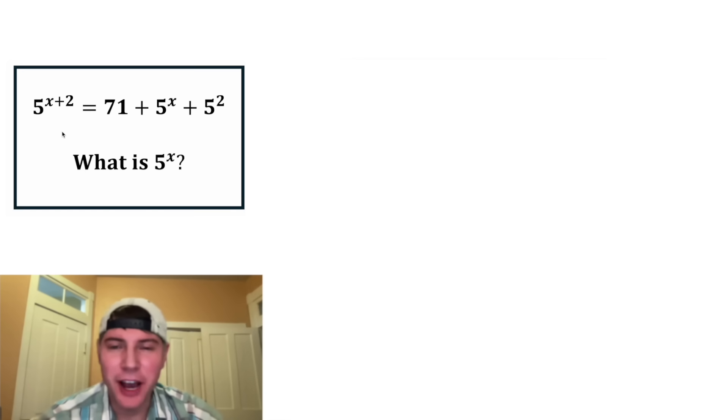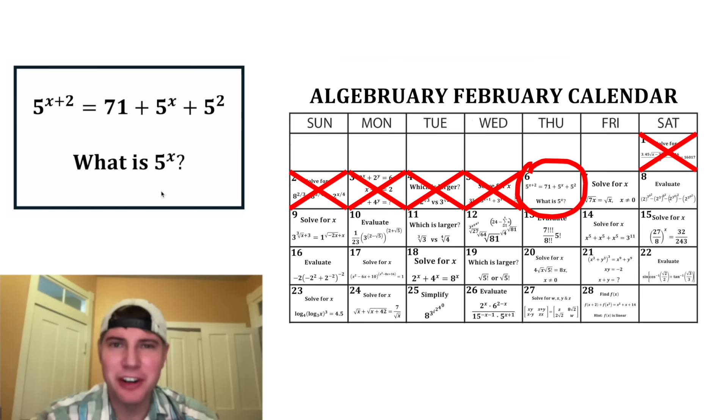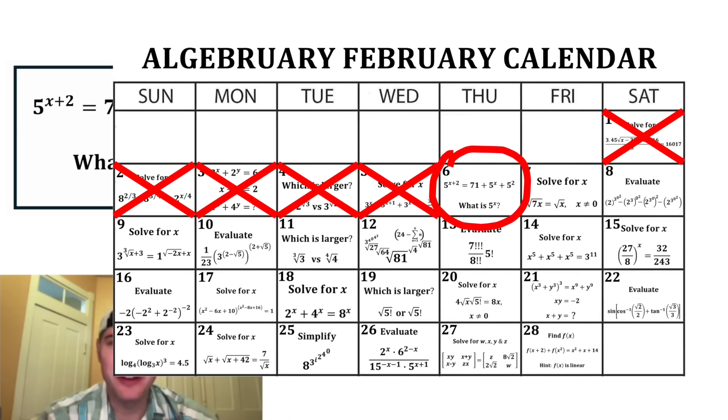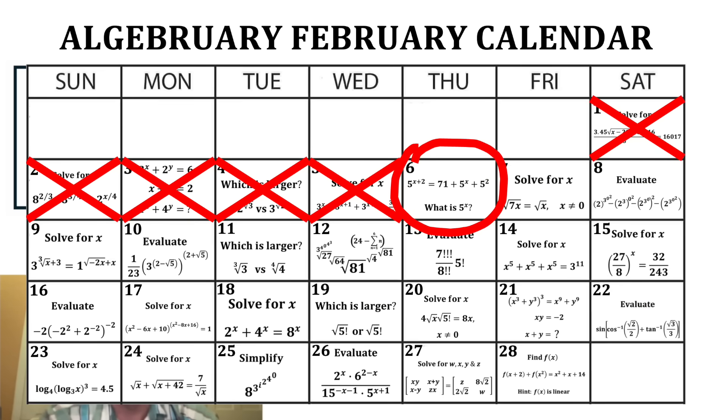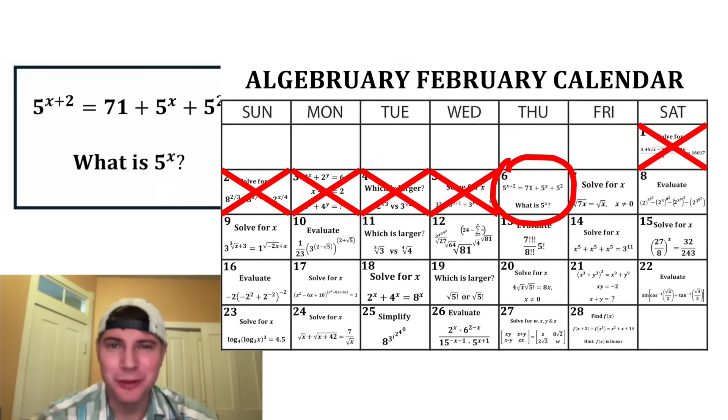Hey guys, this looks like a fun one. It says 5 to the x plus 2 equals 71 plus 5 to the x plus 5 squared, and it wants to know what is 5 to the power of x. This is day 6 of our Algebra February calendar. For the month of February, we're going to solve 28 Algebra problems. Looks like there's a lot of fun ones here.